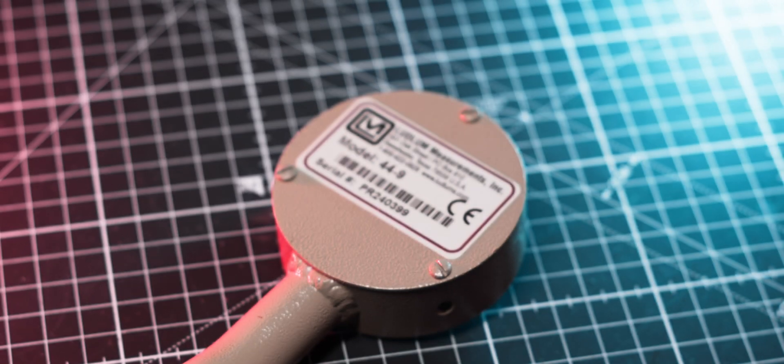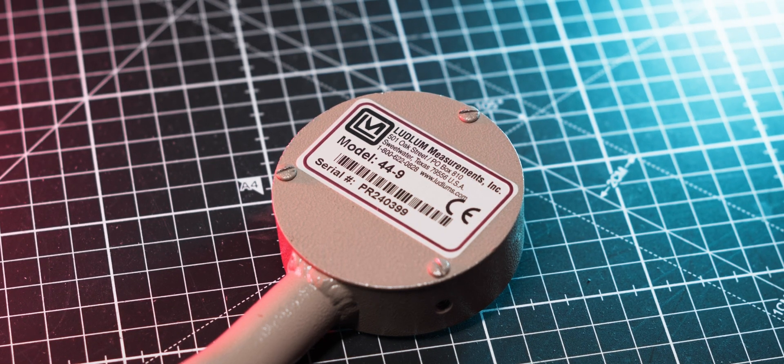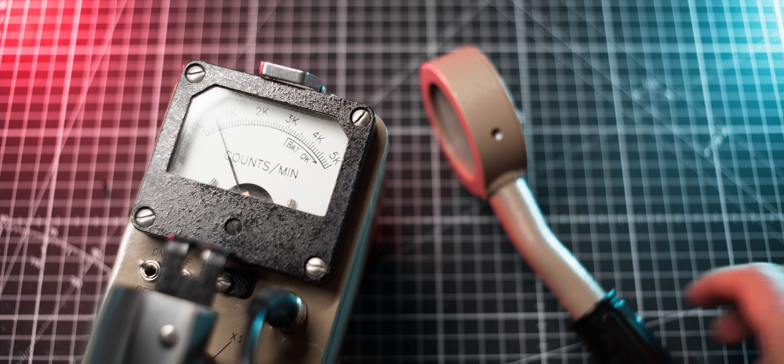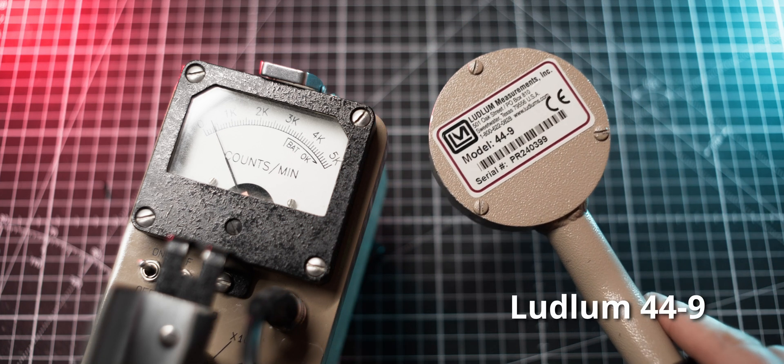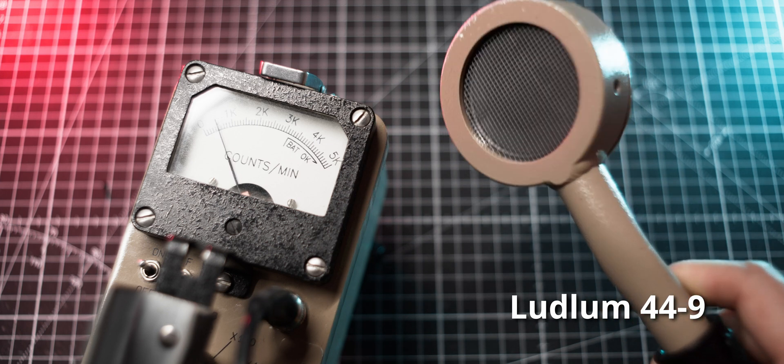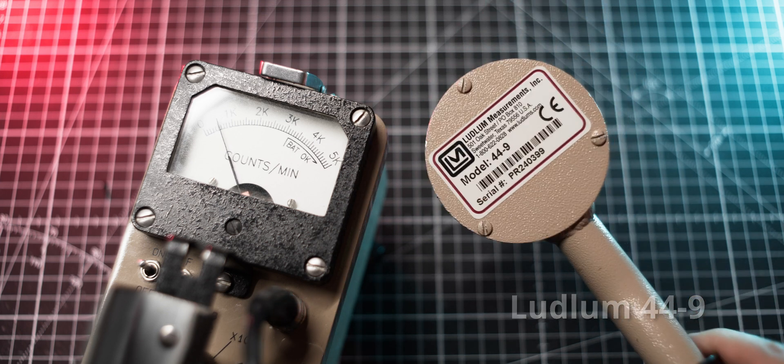When it comes to the Geiger-Müller detectors, one of the most commonly used by the scientific community is the LND7311, which is often found in pancake-style probes such as Ludlum 44-9. The activity units are the best way to measure how active an object or an area is.